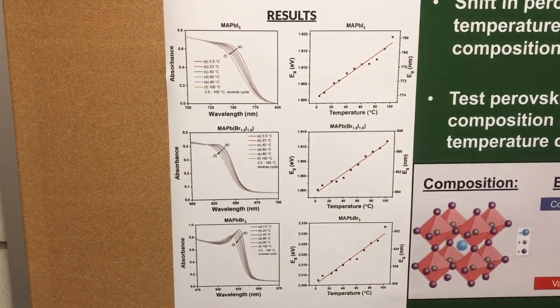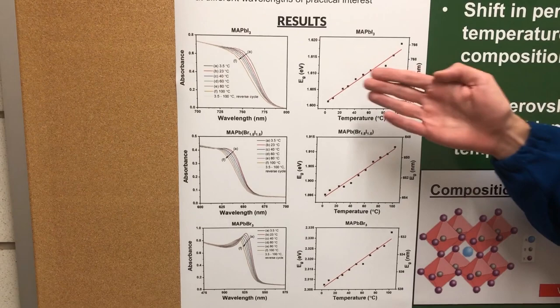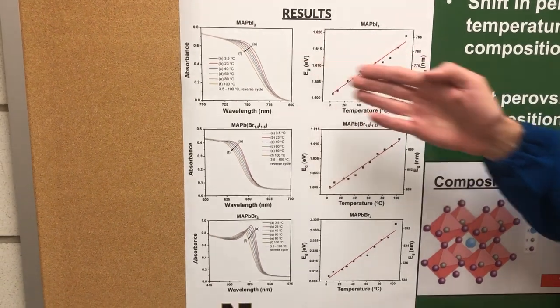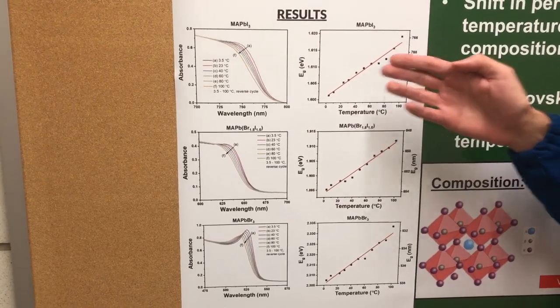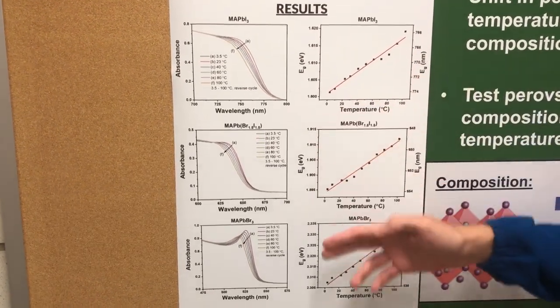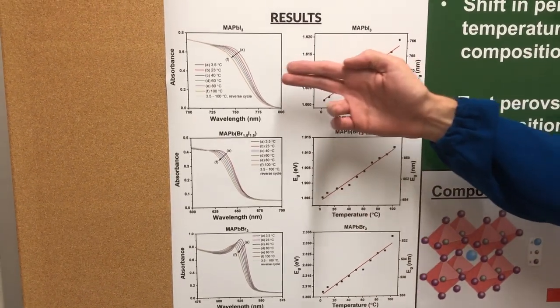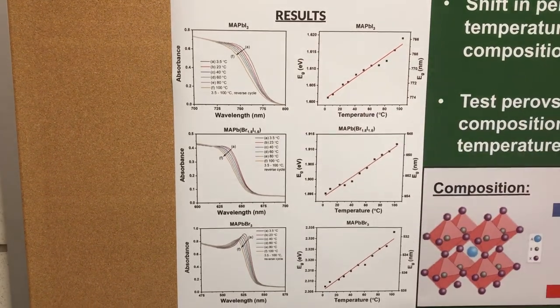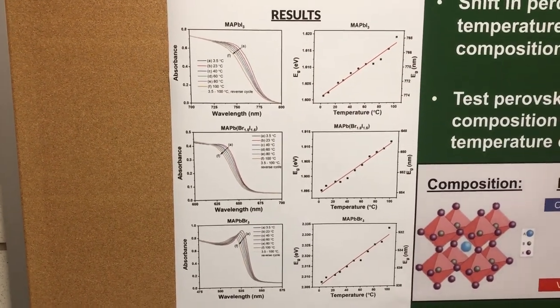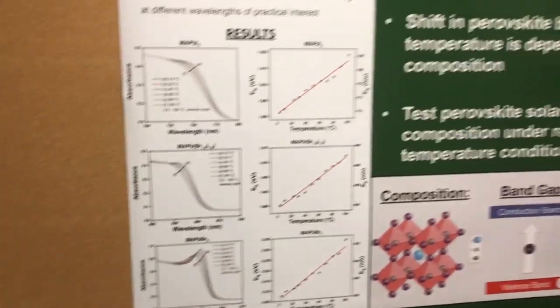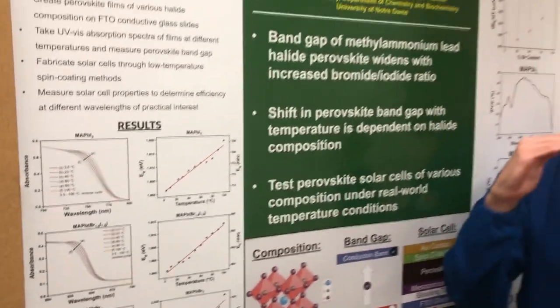As you can see, as temperature increases, the absorbance spectrum for each of the perovskite compositions shifts to the left, which corresponds to a widening of the perovskite bandgap.